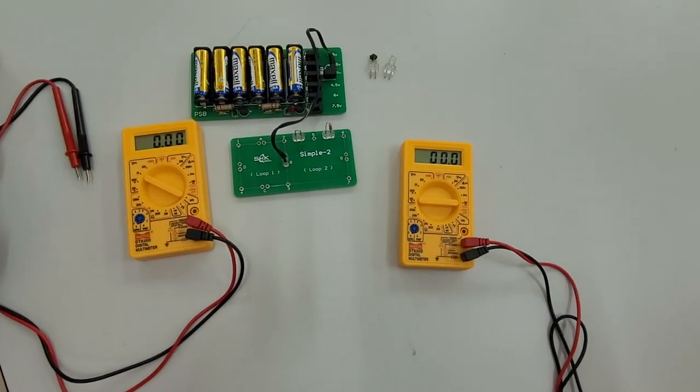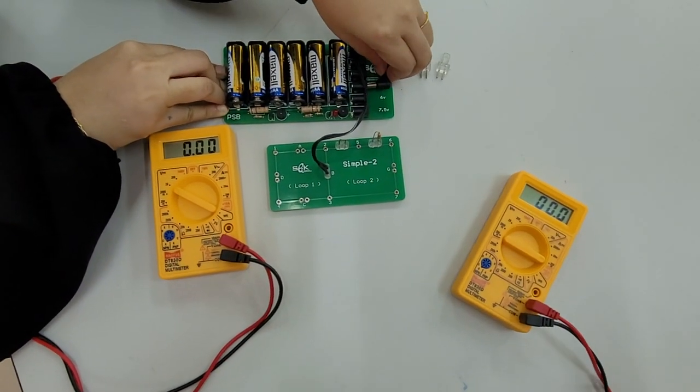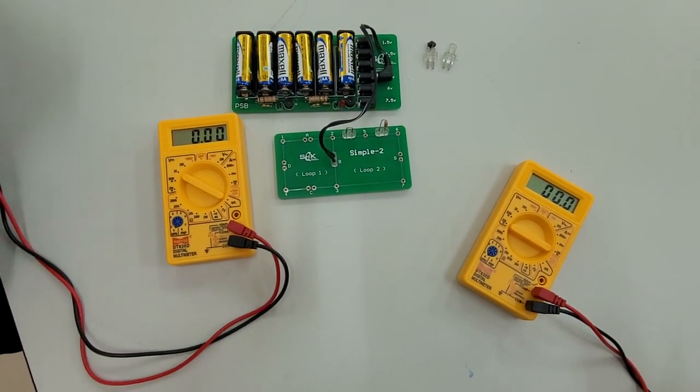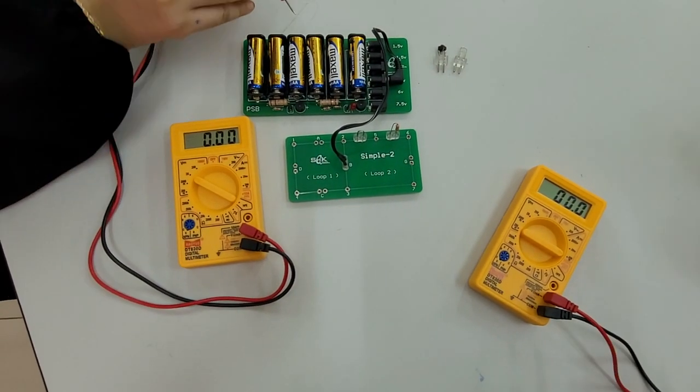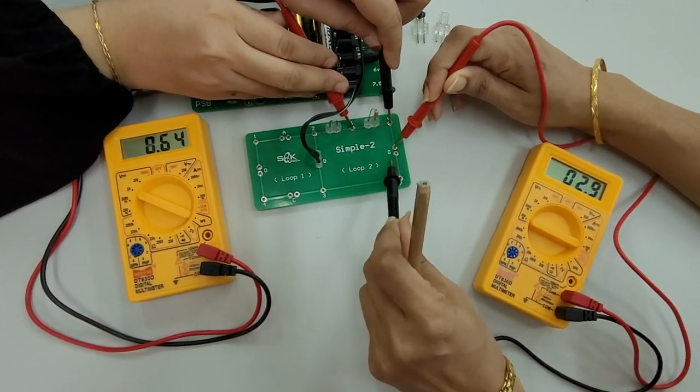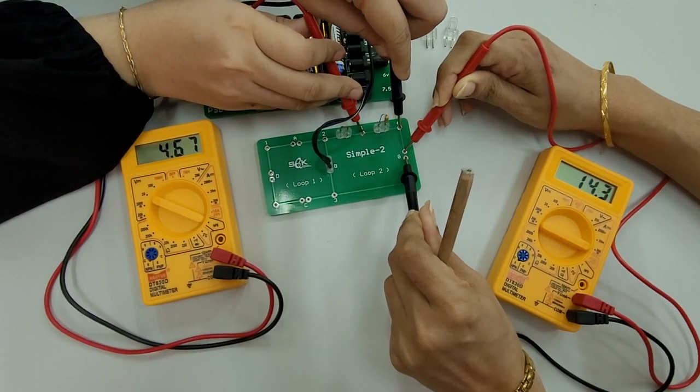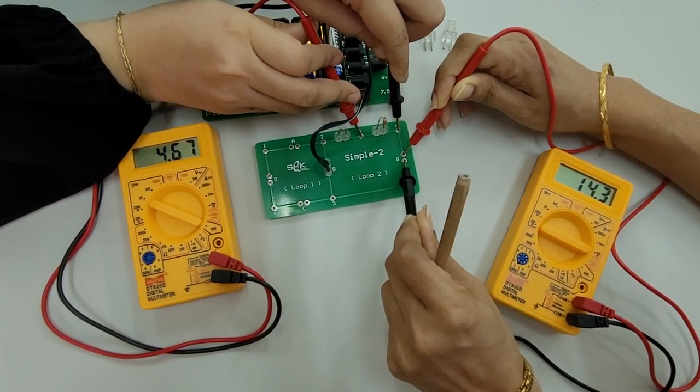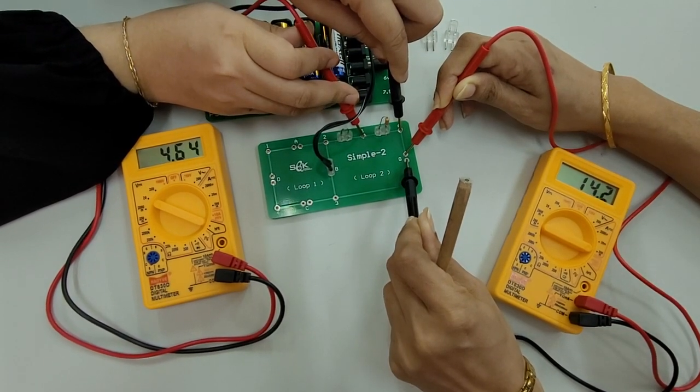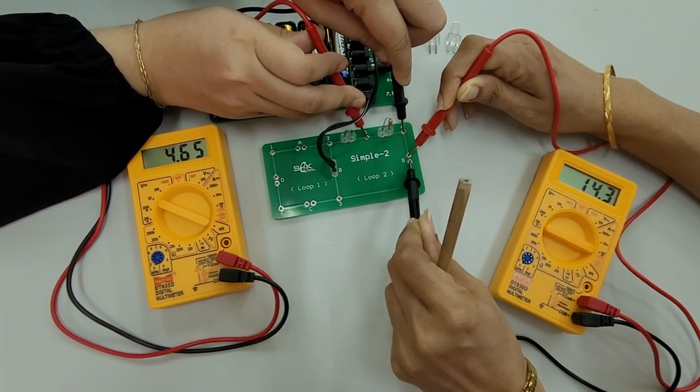Again, set the voltage in the PCB at 4.5V and observe your readings in the digital multimeter for ammeter as well as voltmeter. The reading in the multimeter is 14.3 mA and in the voltmeter it is 4.65 volts.